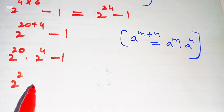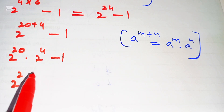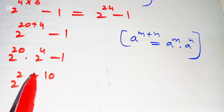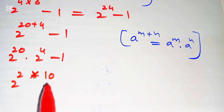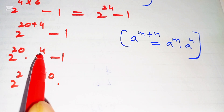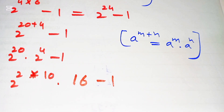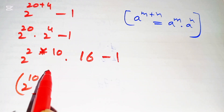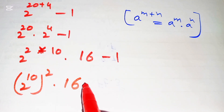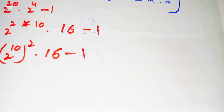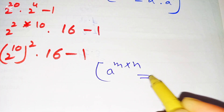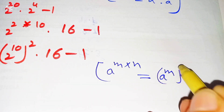Now 2 to the power of 20 can be written as 2 to the power of 10 times 2, which equals 20, times 2 to the power of 4 which is 16, minus 1. So this becomes 2 to the power of 10, whole to the power of 2, times 16 minus 1. Here we use the exponential law: a to the power of m times n is equal to a to the power of m, whole to the power of n.